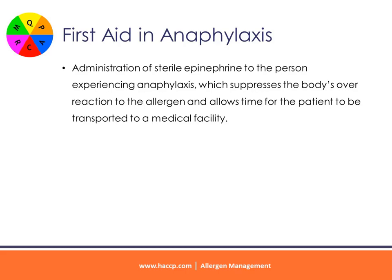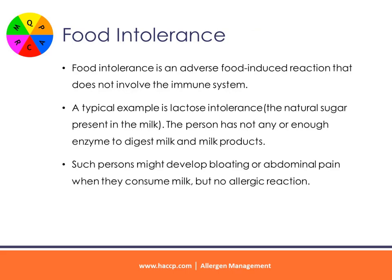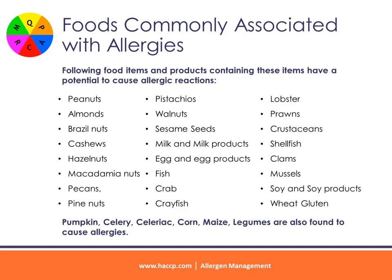One form of treatment for anaphylaxis is the administration of sterile epinephrine to the person experiencing anaphylaxis, which suppresses the body's overreaction to the allergen and allows time for the patient to be transported to a medical facility. Food intolerance is an adverse food-induced reaction that does not involve the immune system; true food allergies include activation of the immune system. An example of food intolerance is lactose intolerance, which is usually when a person does not have enough of the enzyme required to digest milk or milk products, causing bloating and abdominal pain but no immune system response.